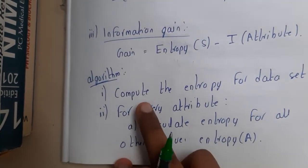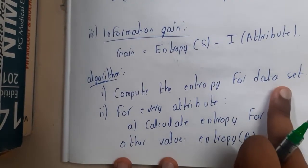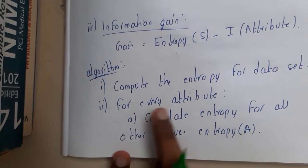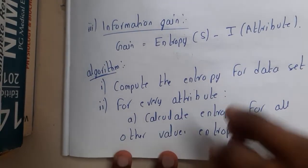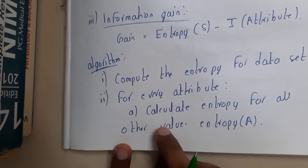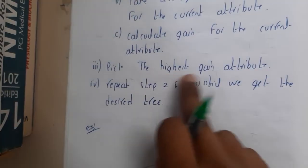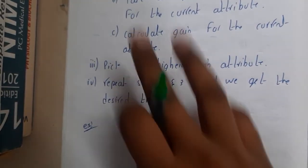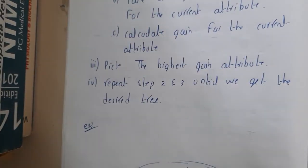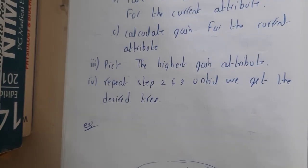The ID3 algorithm steps are: first, compute the entropy for the whole dataset. Then calculate the entropy and information gain for each attribute one after the other. Once calculated, pick the attribute with the highest information gain. Repeat steps two and three until the decision tree is completely built.